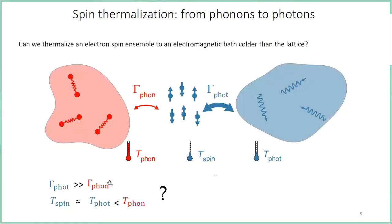We pose ourselves a simple question: can we somehow reverse this scenario and have the spins thermalized to an electromagnetic environment even colder than the phonon lattice? To do so, we would need to accelerate the photon spontaneous emission rate by several orders of magnitude. This question is already of interest from a fundamental physics point of view.